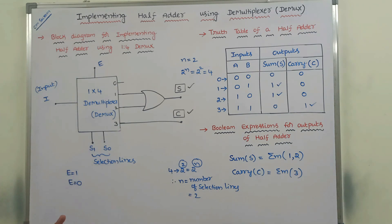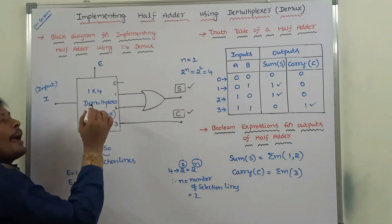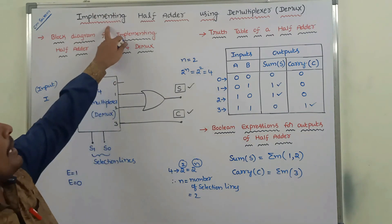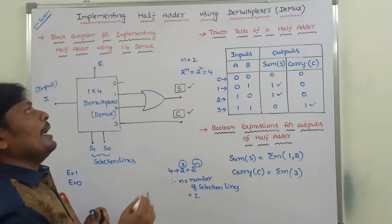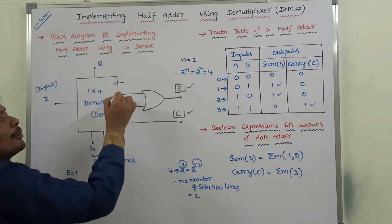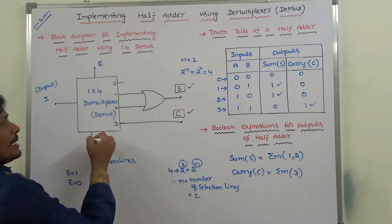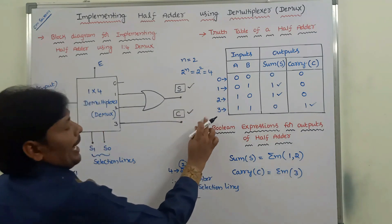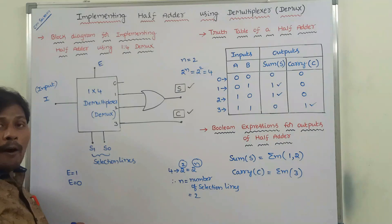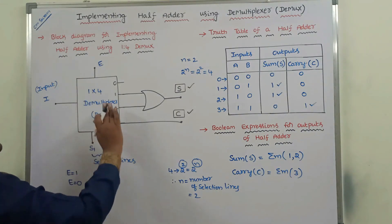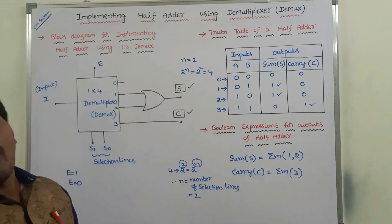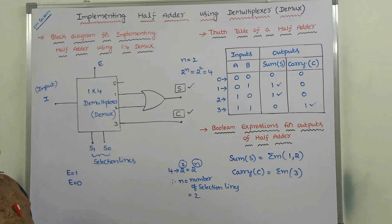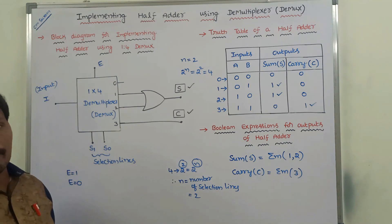Hence we can say that we are implementing the half adder by using a 1-by-4 demultiplexer. This is our aim — implementing half adder using demultiplexer. Here we used a 1-by-4 demultiplexer, and by using it we obtained the half adder outputs: sum and carry. When we get the two outputs of the half adder, we confirm that the 1-by-4 demultiplexer can implement the half adder.